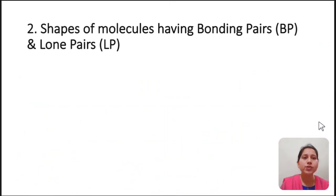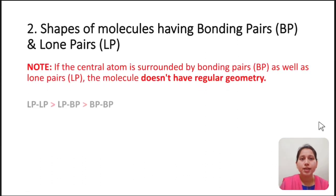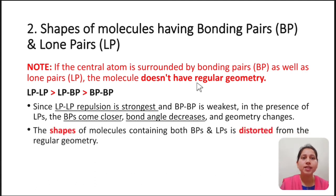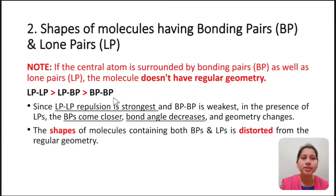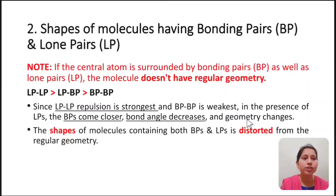Now we will see the shapes of molecules having bonding pairs as well as lone pairs. If the central atom is surrounded by bonding pairs as well as lone pairs, the molecule does not have regular geometry — there is distortion due to the presence of the lone pairs. Since lone pair–lone pair repulsion is strongest and bond pair–bond pair repulsion is weakest, in the presence of lone pairs the bond pairs come closer, the bond angle decreases, and therefore the geometry changes. The shapes of such molecules are distorted from regular geometry.